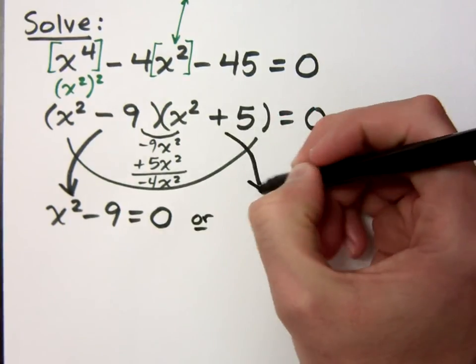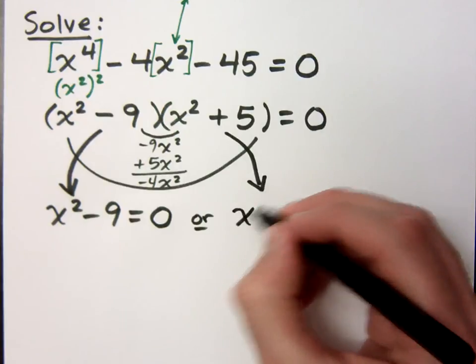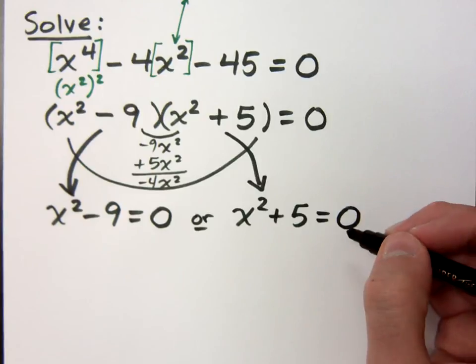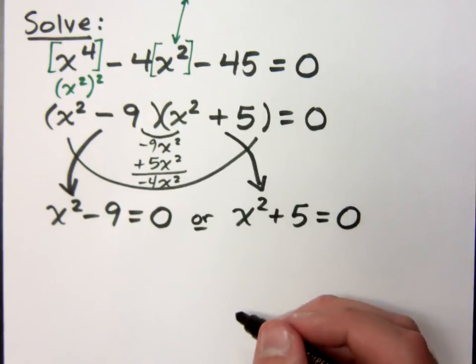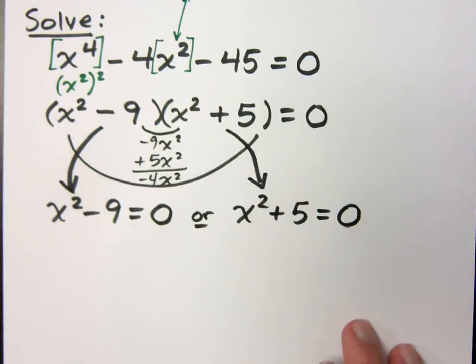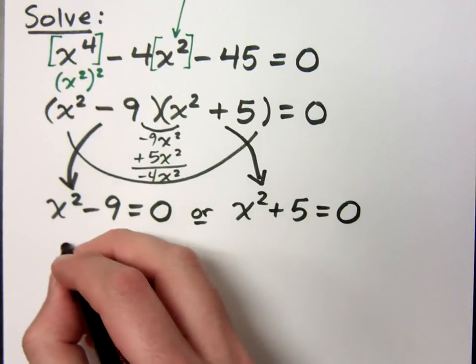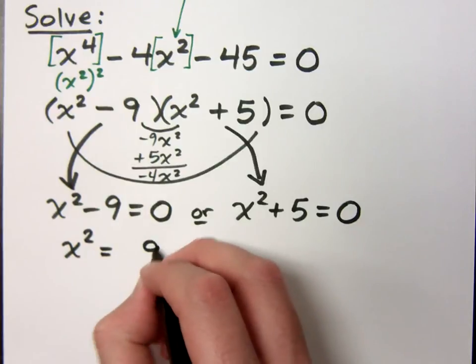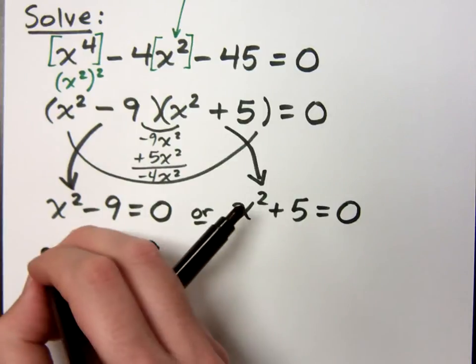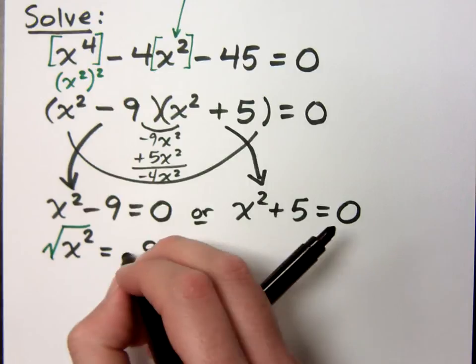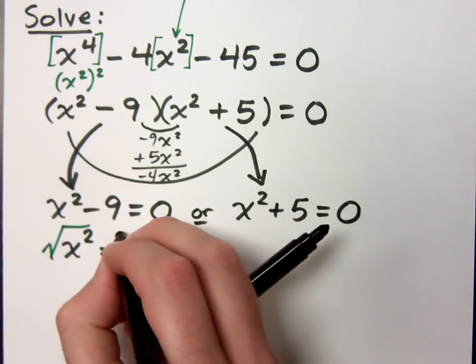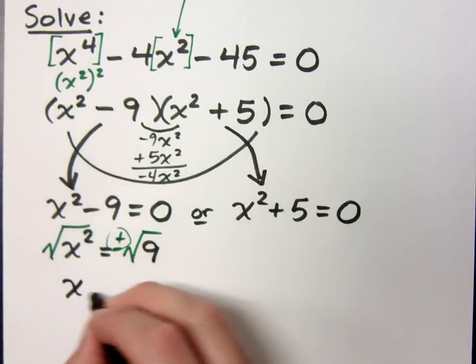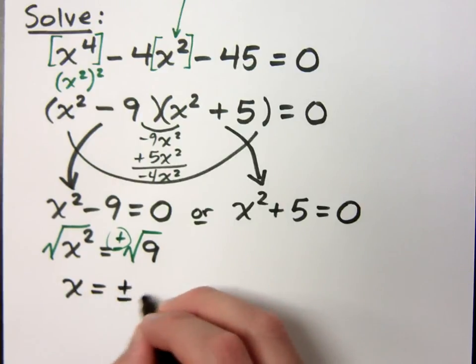The other solutions I'm going to have come from setting this other factor, x² + 5 = 0. So we're going to take these guys one at a time and see what happens. If I isolate the square, I get x² = 9. Then, using the square root property, we take the square root of both sides. Don't forget your plus or minus. And I have that x = ±3.